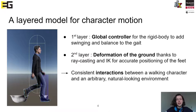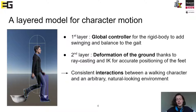In game engines, characters have several layers: a capsule collider, a rigged skeleton, and a rigid body simulation that gives the global position and orientation of the character. Our idea was to use this layered structure to create a layered model for character motion. At a high level, our first layer is a global controller for the rigid body simulation to add swinging to the motion and balance to the gait. At a lower level, the height map is deformed according to accurate positioning of the feet using raycasting and inverse kinematics, giving consistent interactions between a walking character and its environment.